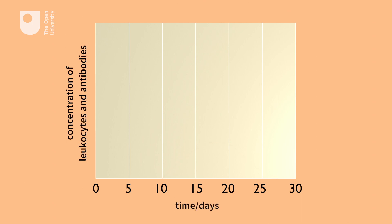we can see that after infection at time zero, it takes ten days for antibody and leukocyte numbers to start increasing. This increase in production of antibodies and leukocytes lasts for just over 15 days.